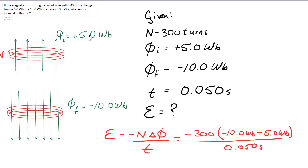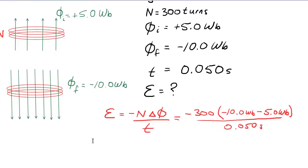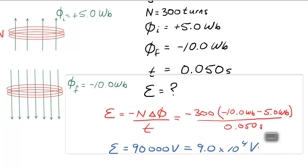So we've got to be careful with questions like this. What is our final answer? Our final answer, it turns out, is 90,000 volts. Or 9.0 times 10 to the 4 volts. This is normal.